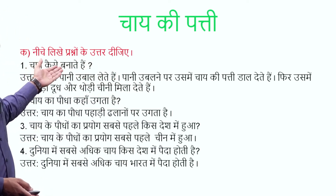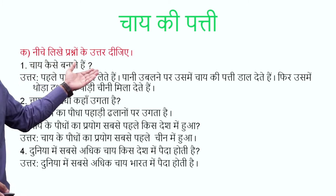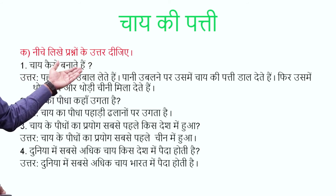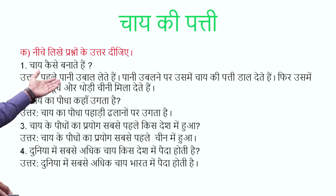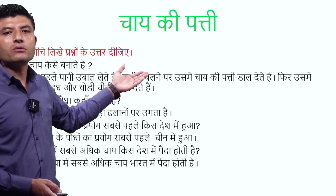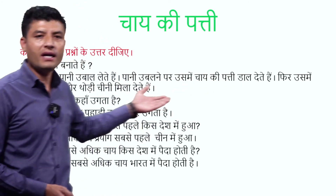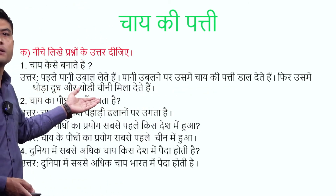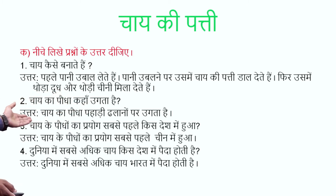Ab abhyas karenge — exercise — page number 34. Neeche likhe prashnon ke uttar dijiye — write down the answers to the following questions. Q1: Chai kaise banaate hain? Answer: Pehle paani ubaal lete hain — first we boil water. Paani ubaalne par chai patti daal dete hain — then we add tea leaves. Phir thoda doodh — little milk — aur thodi cheeni — little sugar — mila dete hain. Q2: Chai ka paudha kahan ugta hai — where does the tea plant grow?